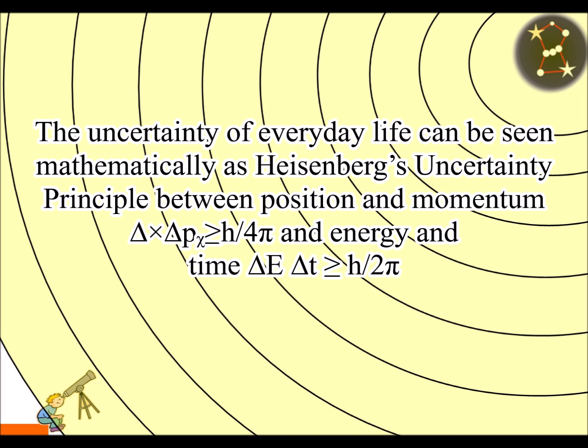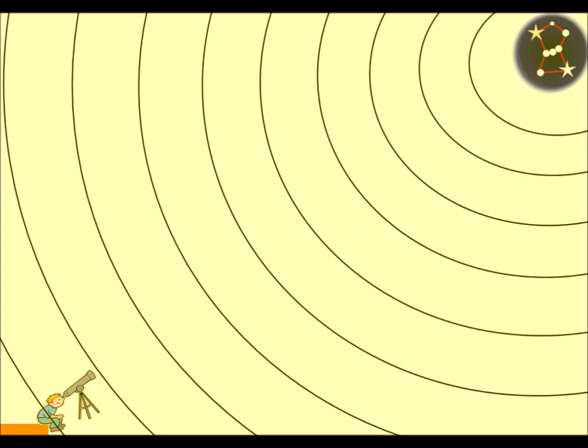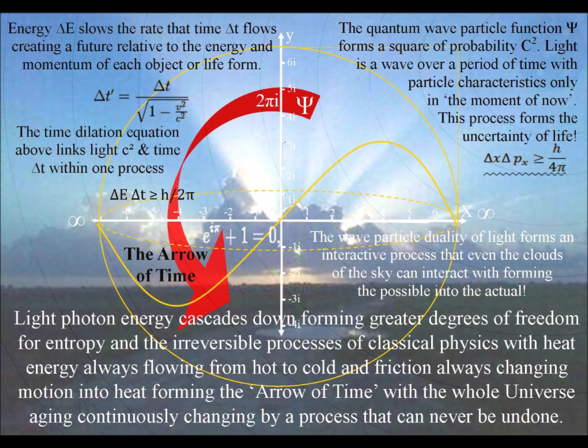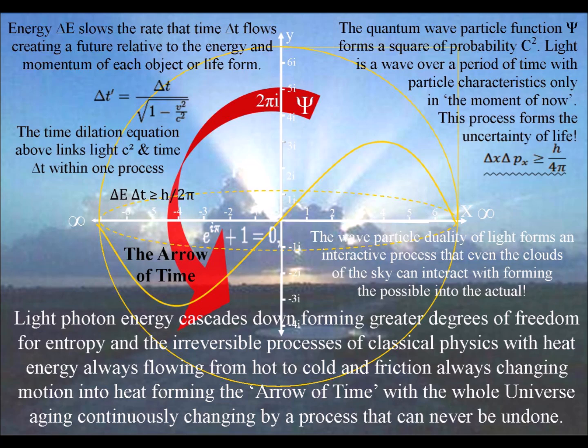The wave front will form a probability of when and where it will encounter an electron, forming the absorption of a photon of energy. In the reference frame of the star, photon energy levels will cascade down, forming greater degrees of freedom for entropy, forming the passage of time within that reference frame.